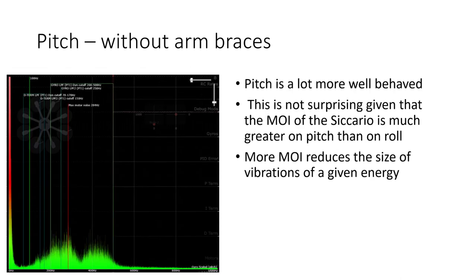So let's look now at the pitch axis. And the first thing we can see is that pitch is a lot more well behaved than roll for this particular drone. And this is not particularly surprising given that the moment of inertia of the Sicario is very much greater on pitch than on roll. And more moment of inertia reduces the size, the amplitude of vibrations on the pitch axis for a given energy of vibration. So we see a smaller amplitude and therefore less noise in the gyro signal. Again there is some motor noise here. There are some motor vibrations that are coming through on the gyro scaled log which is not surprising. And there's also a sign of a vibration just around maybe 60 hertz on the pitch axis.